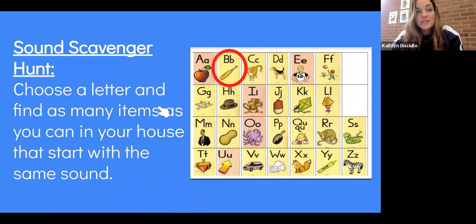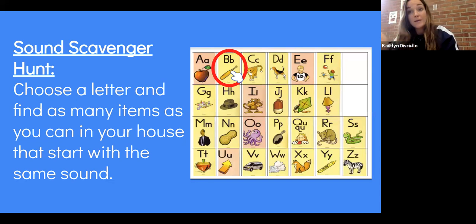Another activity you can do is sound scavenger hunting. So choose a letter and find as many items as you can in your house that start with the same sound. So for example, if I chose the letter B, I might look around my house and find a banana or a bottle or a baby. You're looking for all items that start with the sound that you pick.